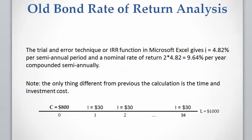We calculate the rate of return for this investment using the trial and error technique or the IRR function in Excel, which is going to be 4.82% per semi-annual period. We need to report this as the nominal rate per year, so we multiply by two, giving us 9.64% per year compounded semi-annually. This is the return on this investment.